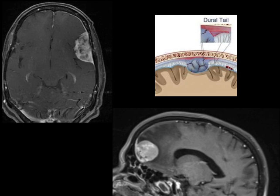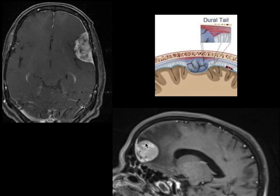These two are the cases of classic meningioma. You can see the extra-axial lesion, you can see the thickening and enhancement of the adjacent dura anteriorly and posteriorly along the left frontal convexity — classic appearance of meningioma with dural tail sign. This is another case of frontal meningioma. You can see the adjacent thickening and enhancement of the dura in a classic case of meningioma.